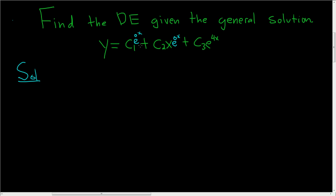Because we have a repeated real root of m equals 0, and it appears twice, so the multiplicity is 2. And then here we have a root of 4, and the multiplicity is 1.